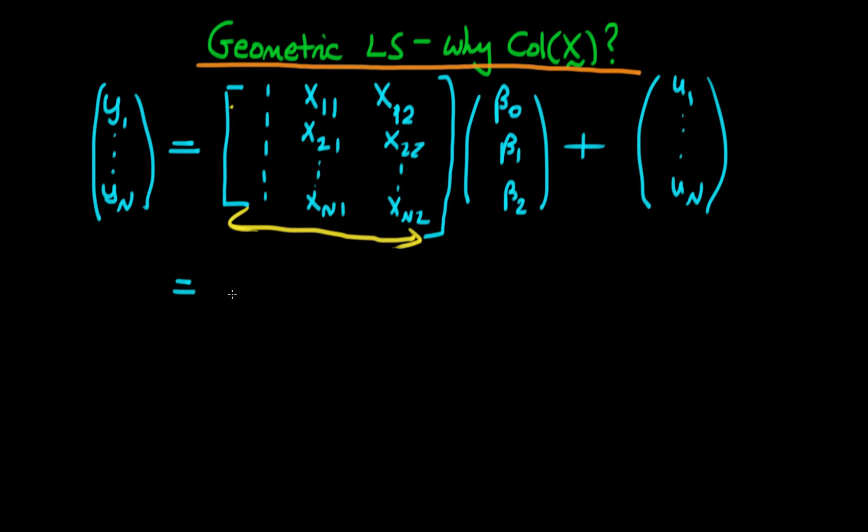The first vector, V0, is just this column. So it's just the vector of 1s.